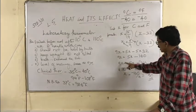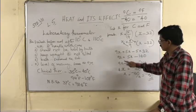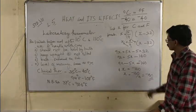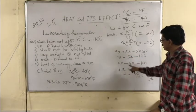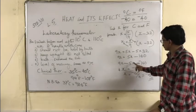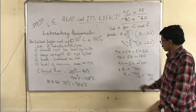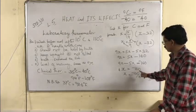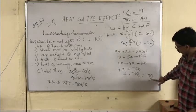Now 9X minus 5X is equal to minus 160. This will come here, this will go here. So 4X is equal to minus 160 divided by 4 is equal to minus 40.